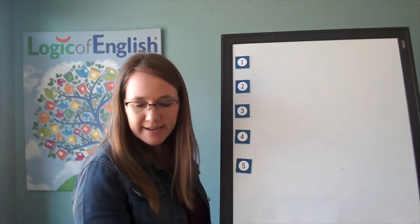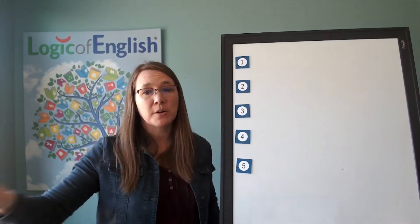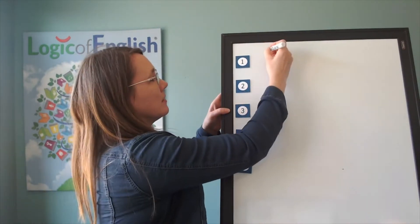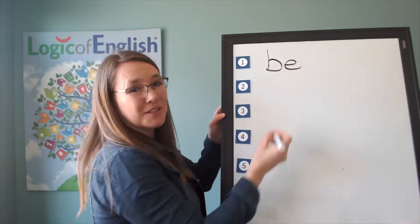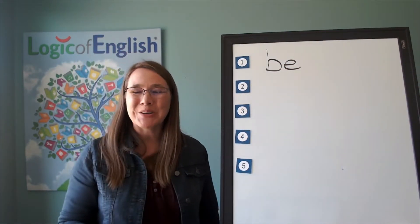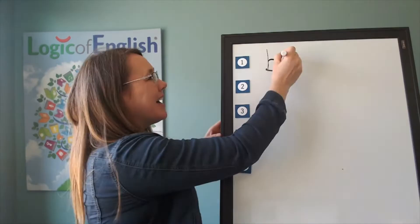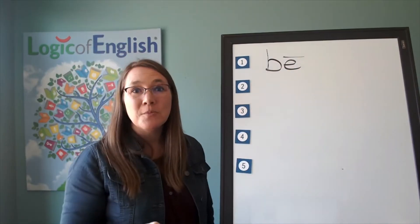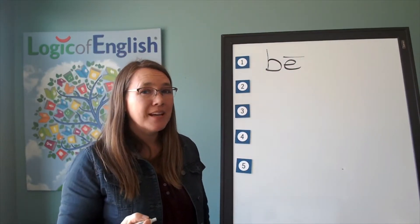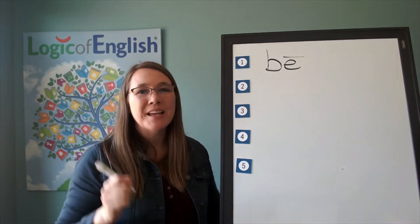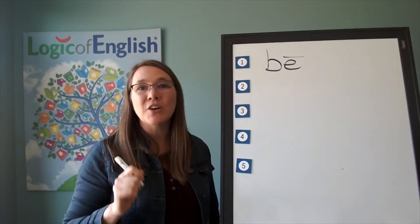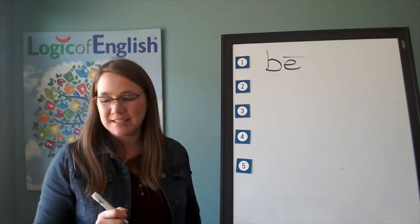Now, help me to write it with my whiteboard marker. You sound it out. B-E. And how will we mark it? We will put a line over the E because it says its long sound. And one more time, let's say the rule. A-E-O-U usually say their long sounds at the end of the syllable.